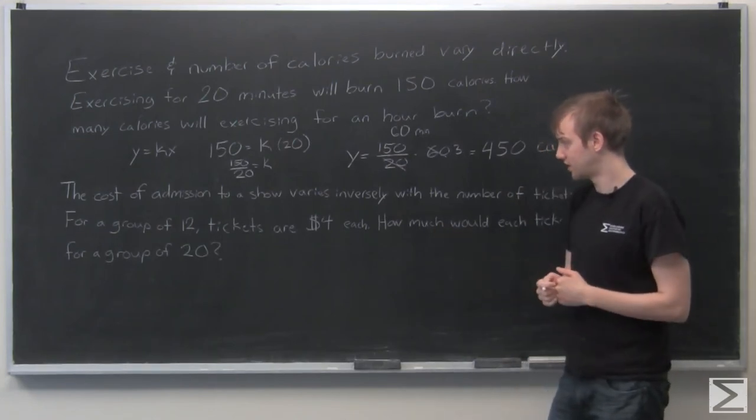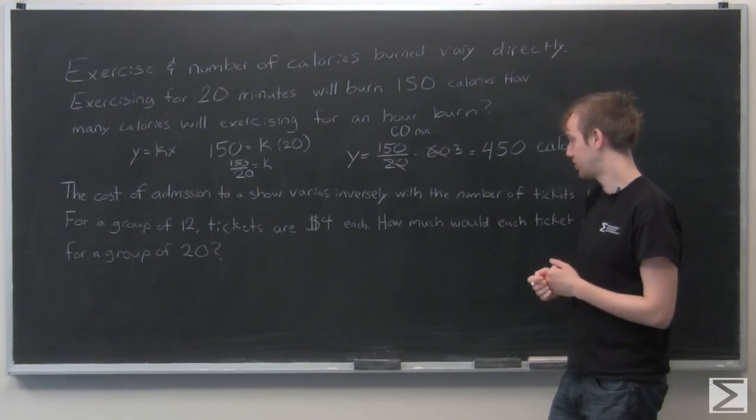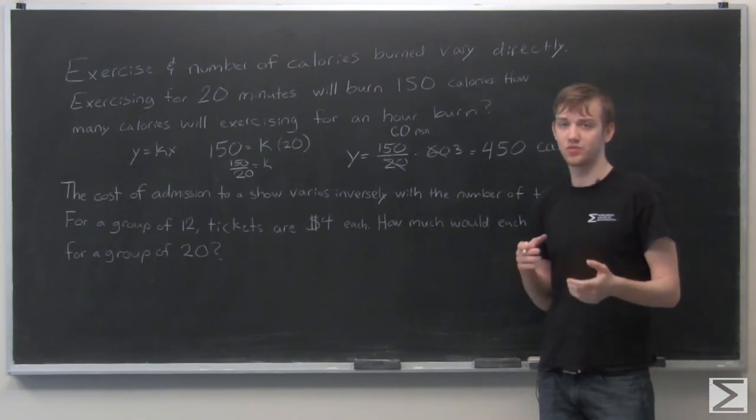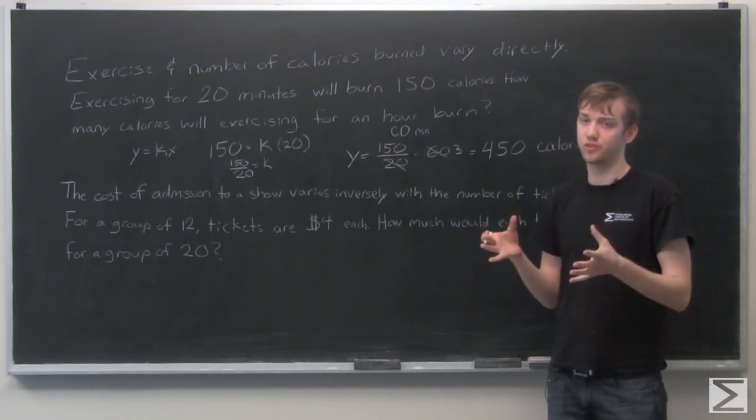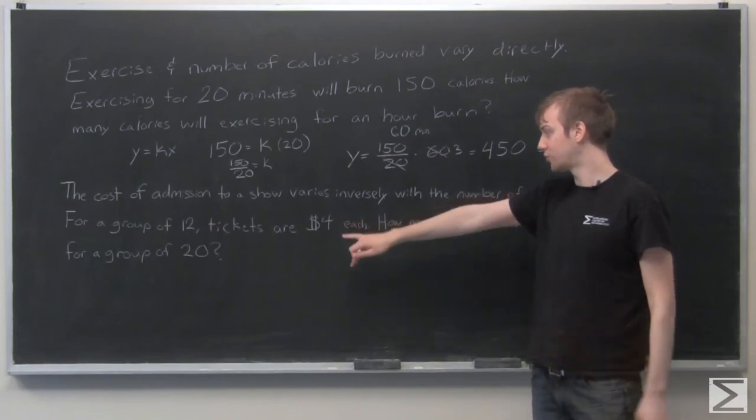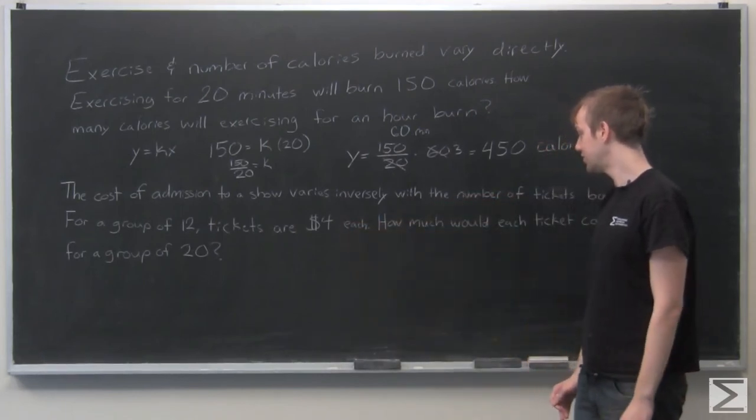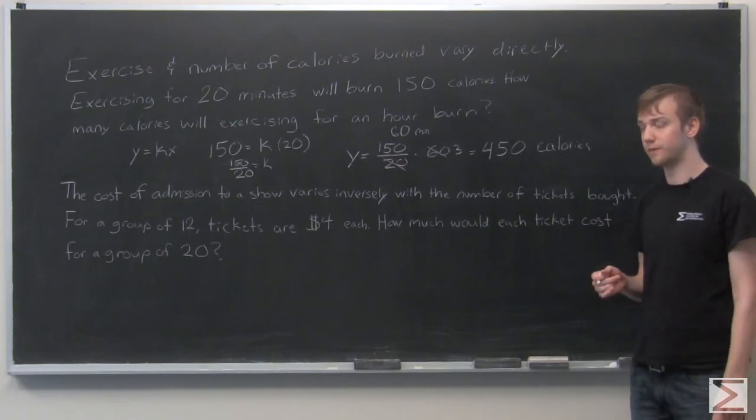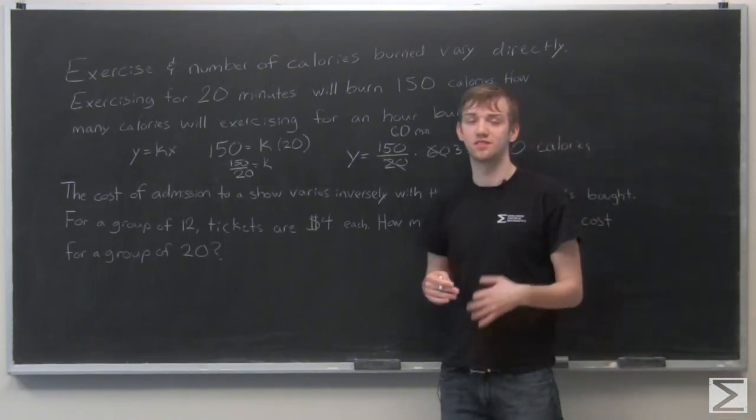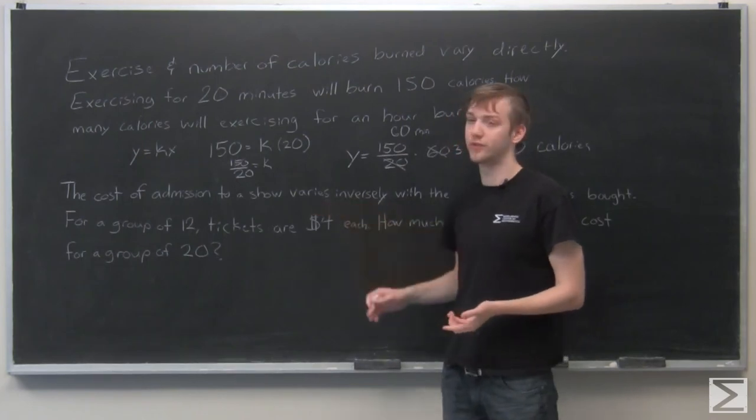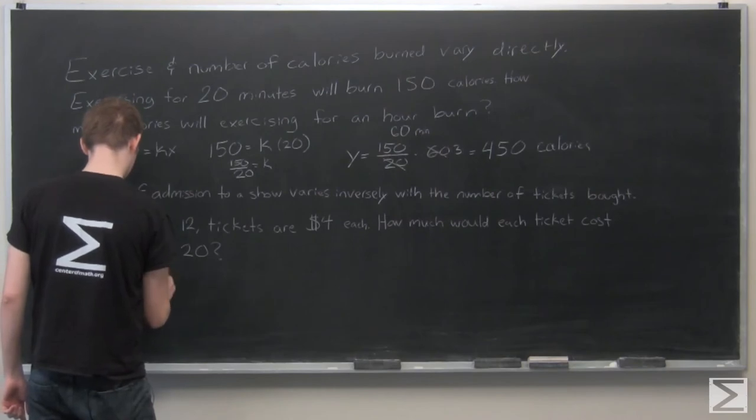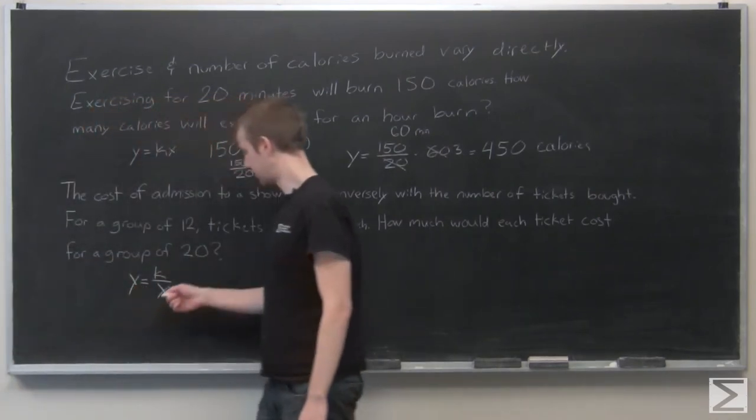All right, the next exercise. The cost of admission to a show varies inversely with the number of tickets bought. So that means if you go with a larger group, your price is going to go down. For a group of 12, tickets are $4 each. How much would each ticket cost for a group of 20? So again, the problem states explicitly that we're dealing with inverse variation, so we can write down our formula.